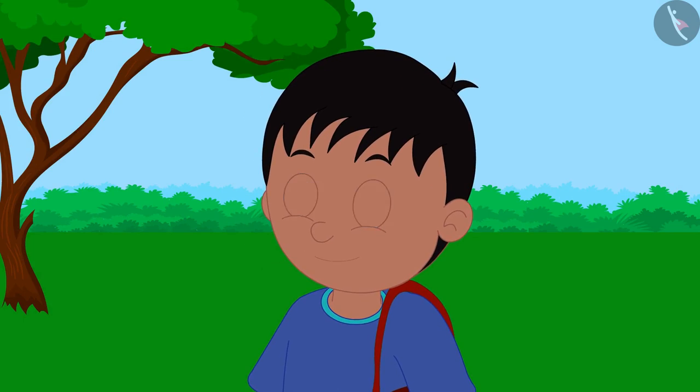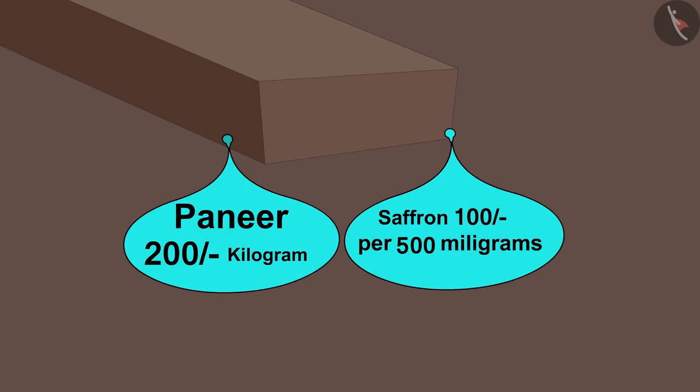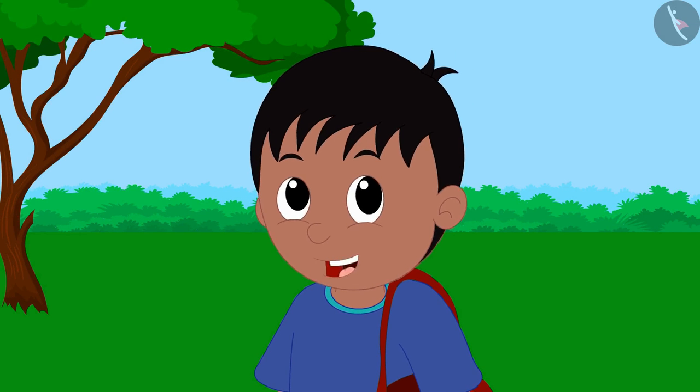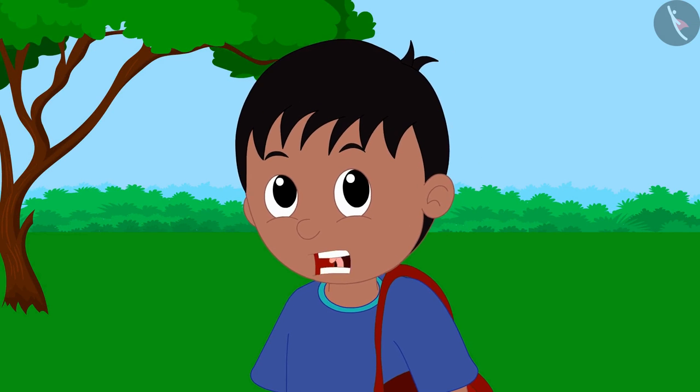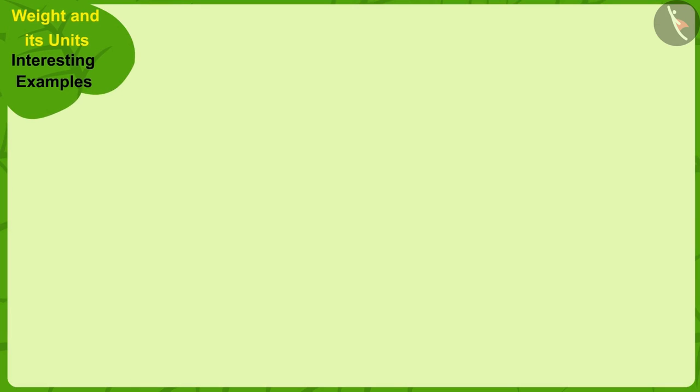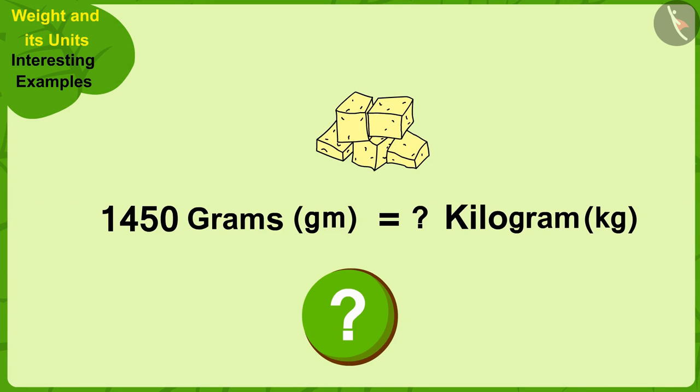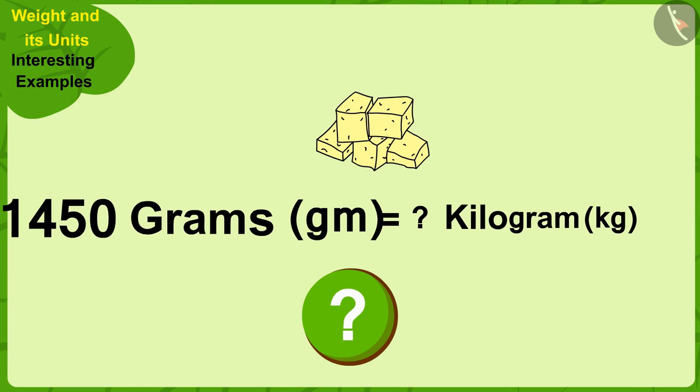Now Raju read on the board on Appu's shop. Paneer, 200 rupees per kilogram. Oh no! Mother had asked me to bring 1450 grams of paneer. How many kilograms would that be? Children, can you tell how many kilograms will be equal to 1450 grams?